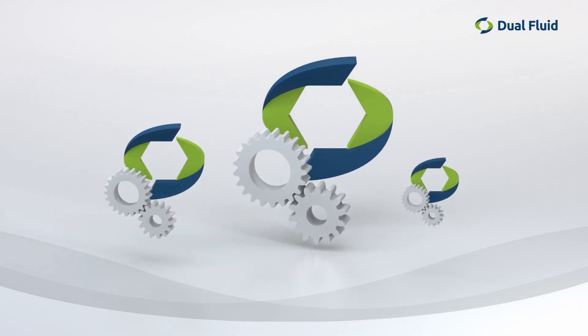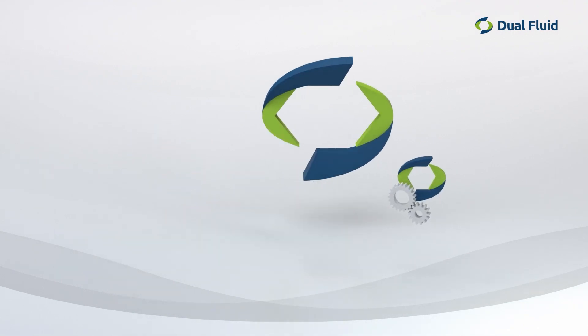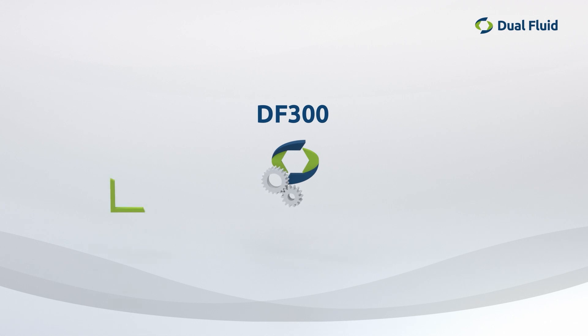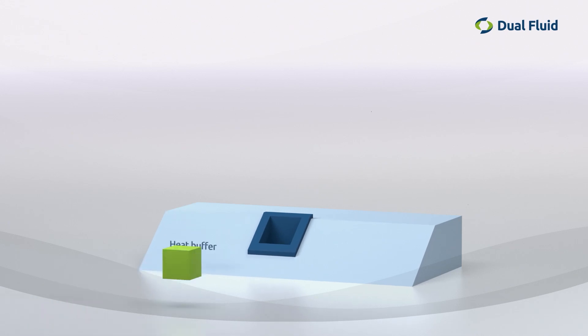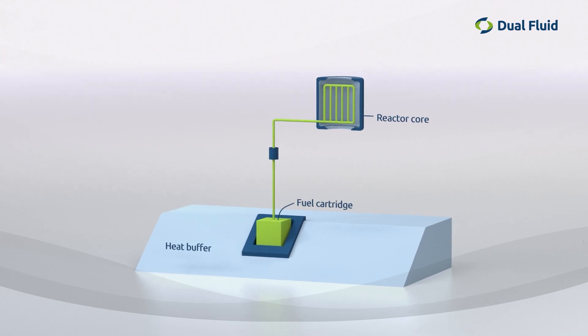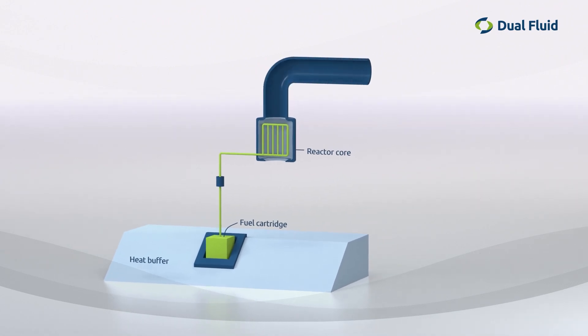The dual fluid principle can be realized on different scales. Our small modular model DF300 is highly flexible and affordable. This is how it works. The fuel is delivered to the power station in a sealed cartridge. It is then heated and pumped into the reactor core, where it generates heat for about 25 years.